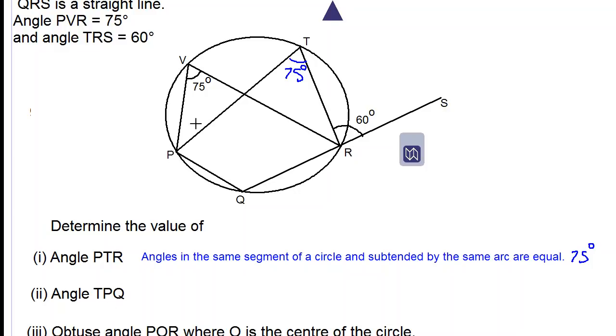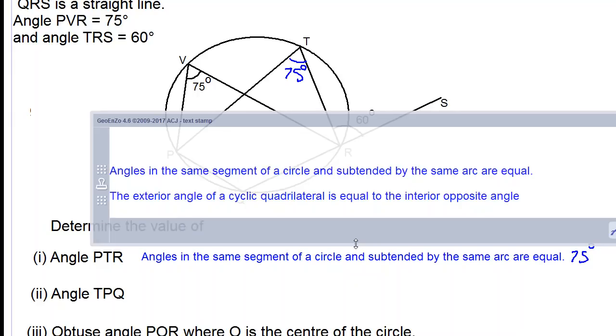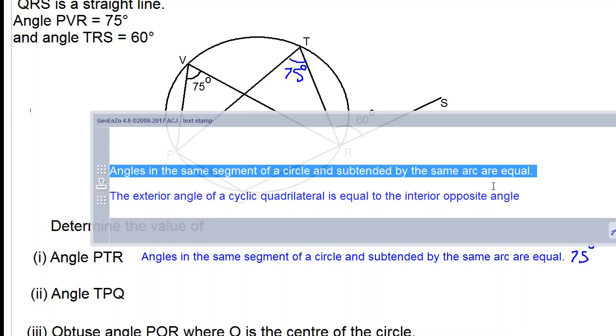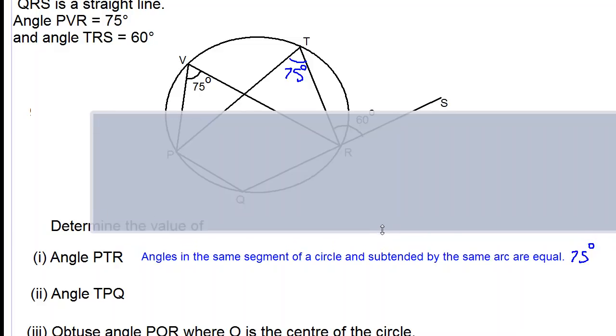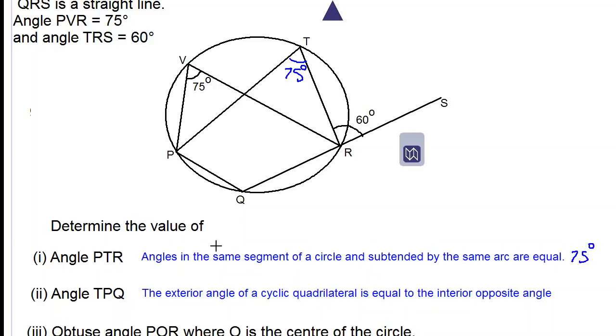Let's look at angle TPQ. So we're using another circle theorem: the exterior angle of a cyclic quadrilateral is equal to the interior opposite angle. So the cyclic quadrilateral, I will outline it in blue, PTRQP. This is our cyclic quadrilateral since all four vertices touch the circumference of the circle.